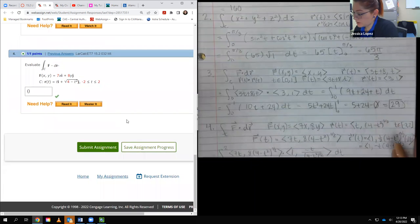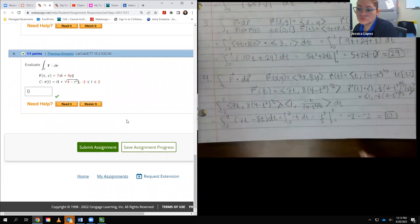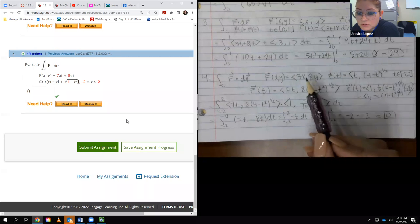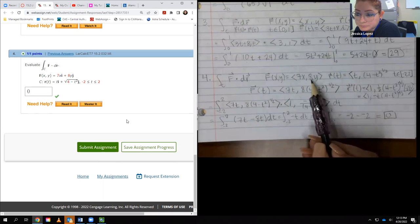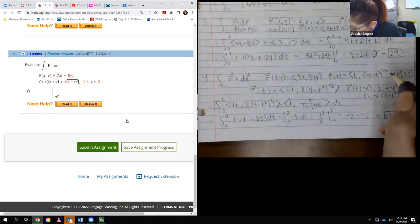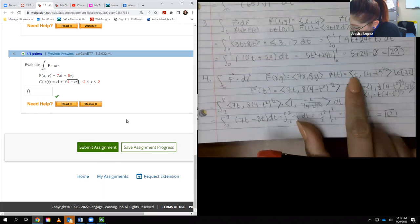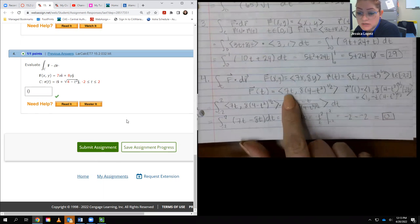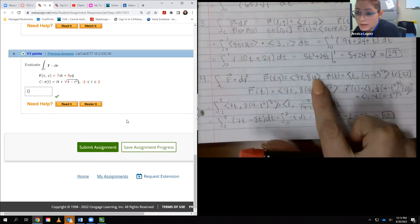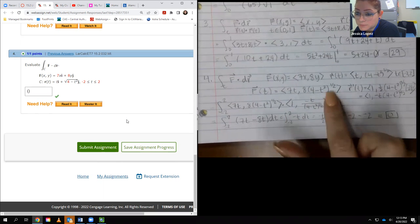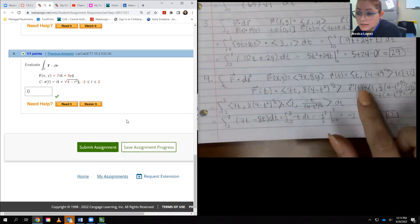Now, last problem. Again, these are real short, not too long. They're asking us to do the same thing again, so we're going to literally repeat the process. But notice that this time, your vector field is not just x and y. So when I plug in the component here, t, and for x, this just becomes 7t. But when I plug in this expression for y, it becomes 8 times that expression that I plugged in.